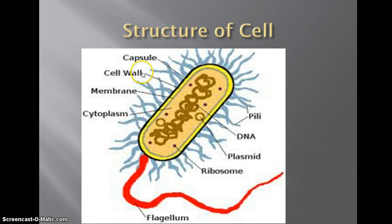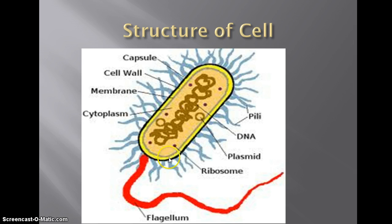The cell wall is basically there for structure and support, and it gives the cell its shape. We talked about the basic shapes of bacterial cells: rod, round, and spiral. And the cell membrane — which we see right here — is this yellow layer right inside the cell wall.